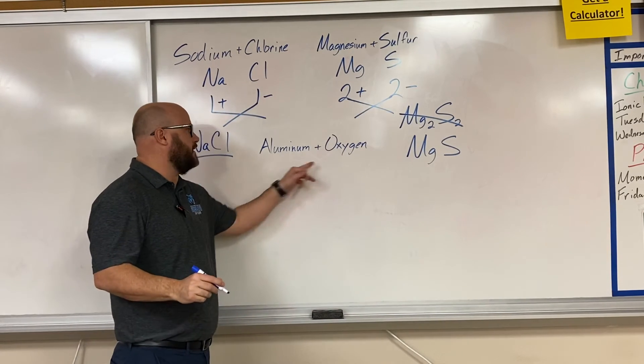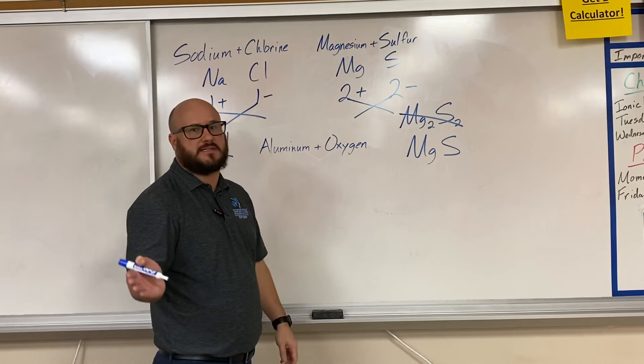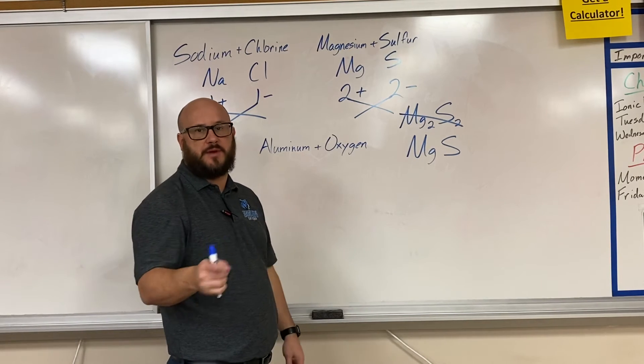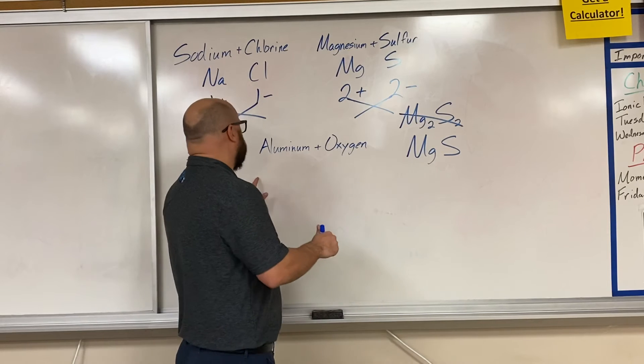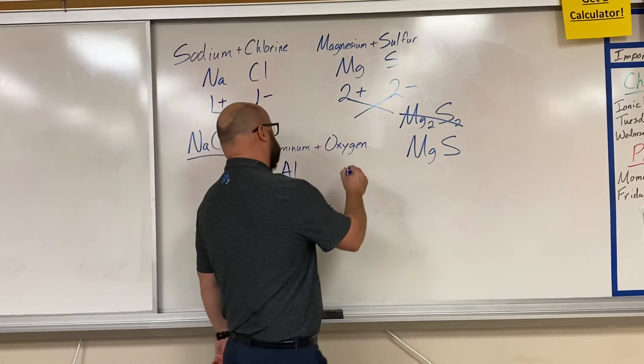Lastly, aluminum plus oxygen. If you find aluminum, it's kind of on the right side of the periodic table, but it's still a metal. It's in group 3A, meaning it has 3 valence electrons. Aluminum's symbol is Al, oxygen symbol O.